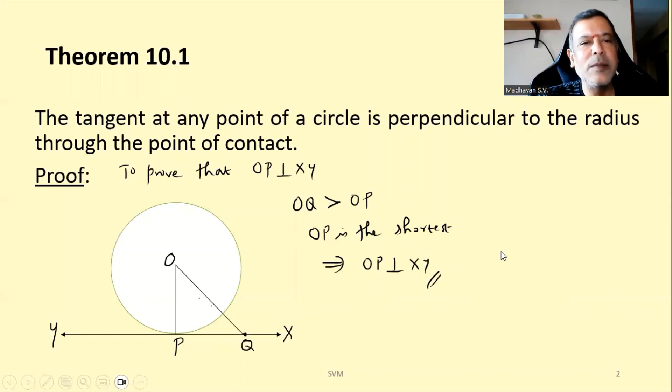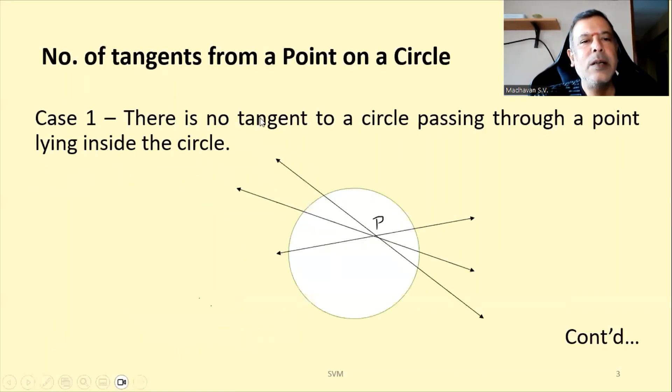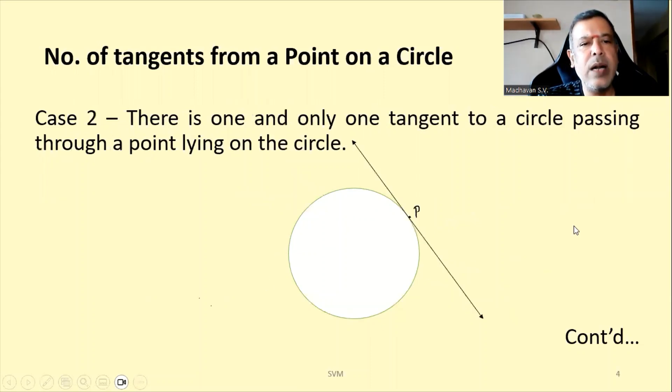Let us move on. Number of tangents from a point on a circle. Suppose if I consider a point P inside the circle, then you may not get any tangent. There is no tangent possible which is passing through this point because everything becomes secant here. This also becomes secant, this also becomes secant. That is case one.